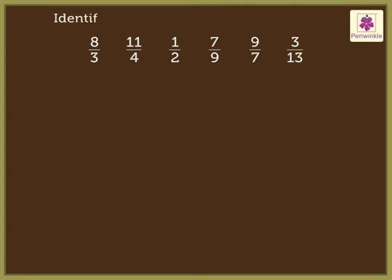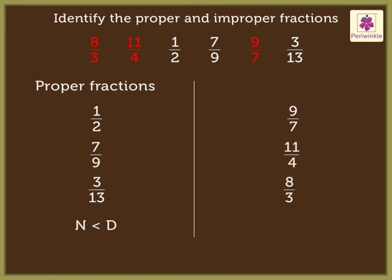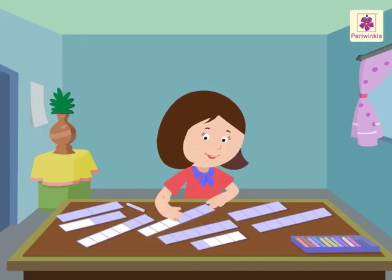Let's look at these fractions and identify the proper and improper fractions. These fractions have numerators smaller than the denominators, so they are proper fractions. The remaining fractions have numerators greater than the denominators, so they are improper fractions. Annie completed her coloring and we learned together — hope you had fun!